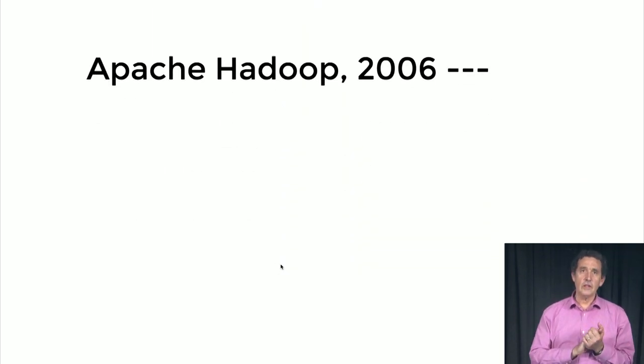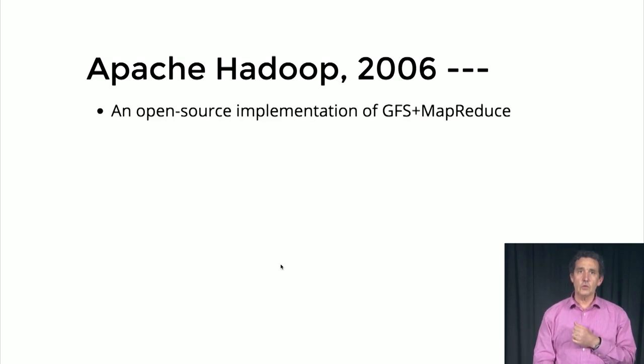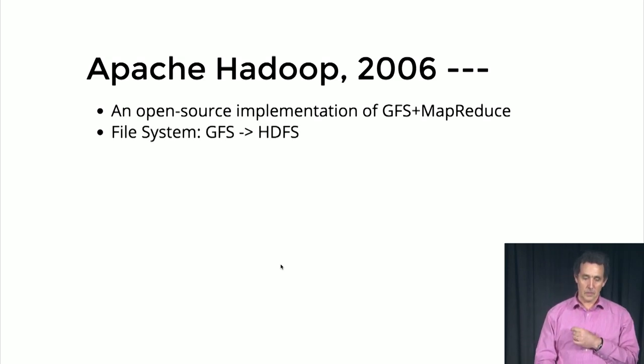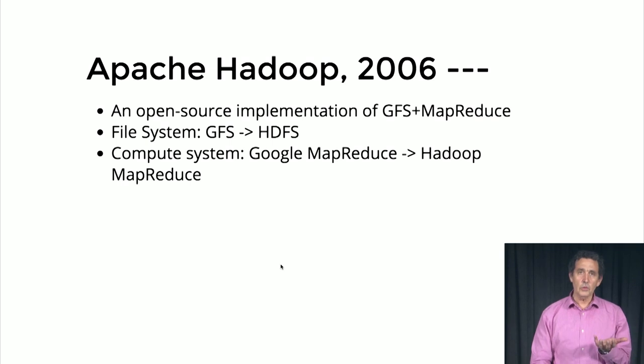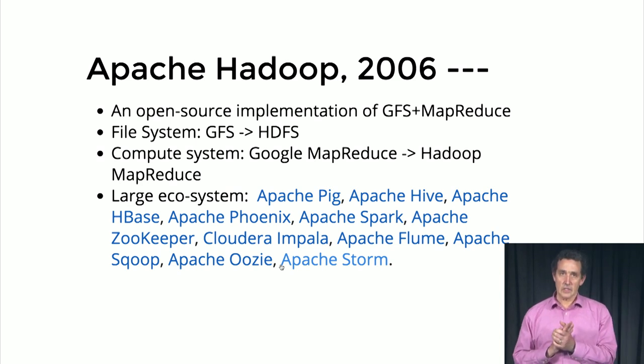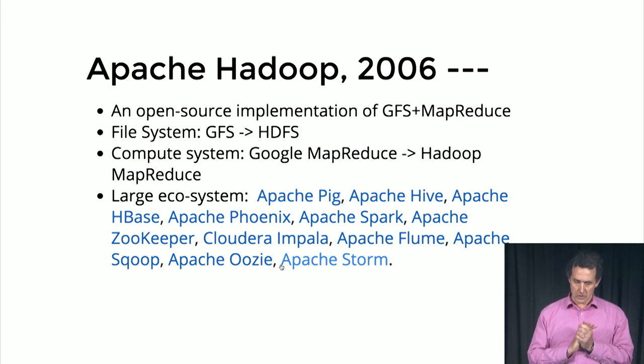That gave rise to Apache Hadoop, which was the open source implementation of the Google File System and MapReduce. The file system we use in Spark is HDFS, the Hadoop Distributed File System, instead of GFS. It's a very successful, large software environment with different packages contributed by various companies and universities, all working around this distributed file system and distributed computation.